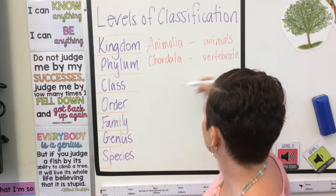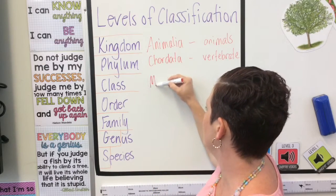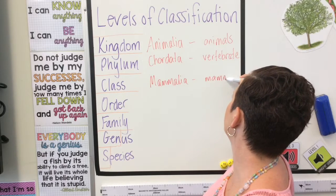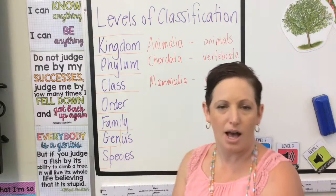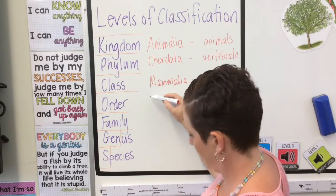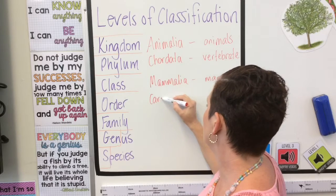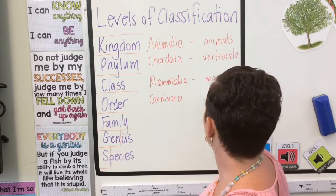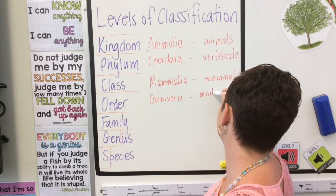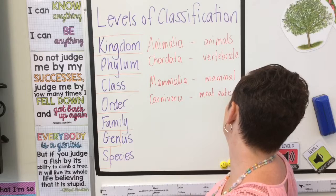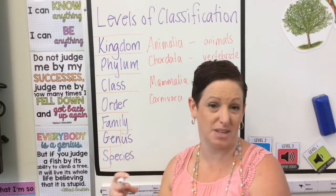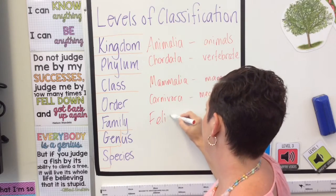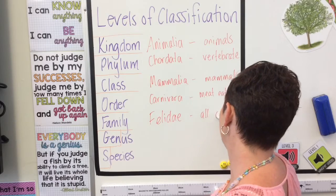So the kingdom is Animalia, the phylum is Chordata — he is an animal with bones inside his body. The next level is the class: he is in the class Mammalia, which means he is a mammal. The next level is the order, and he is in the order Carnivora — which sounds a lot like 'carnivore' — meaning he eats meat. Then we get down to the family: he's in the family Felidae, which means all cats.